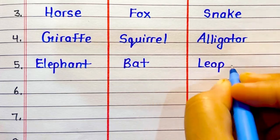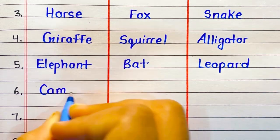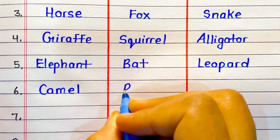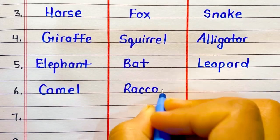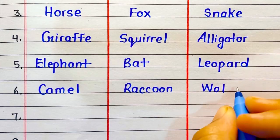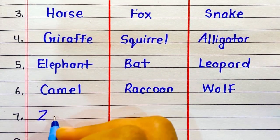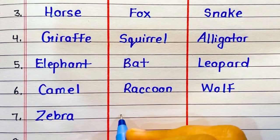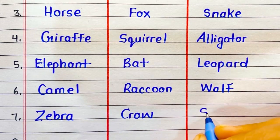Herbivore: giraffe, elephant, camel, zebra. Omnivore: squirrel, bat, raccoon, crow. Carnivore: alligator, leopard, wolf, shark.